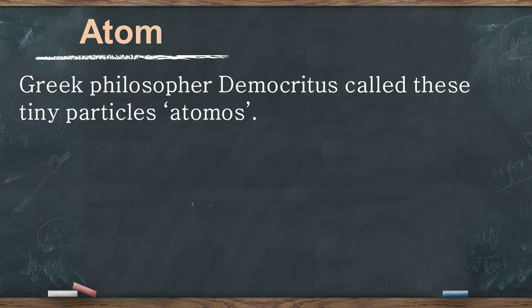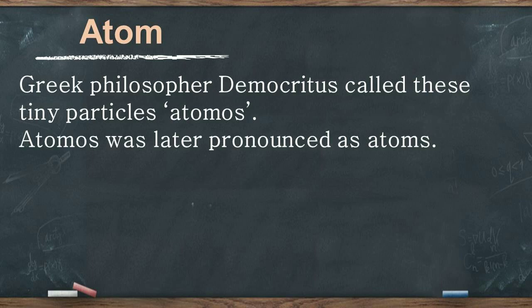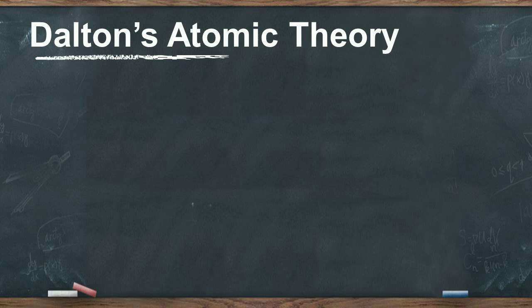But he named these tiny particles atomos. Atomos is a Greek word which means indivisible. Atomos was later pronounced as atoms. The major contribution regarding the structure of an atom was given by John Dalton. He first proposed his atomic theory in the year 1808. Let's study the main points of Dalton's atomic theory.